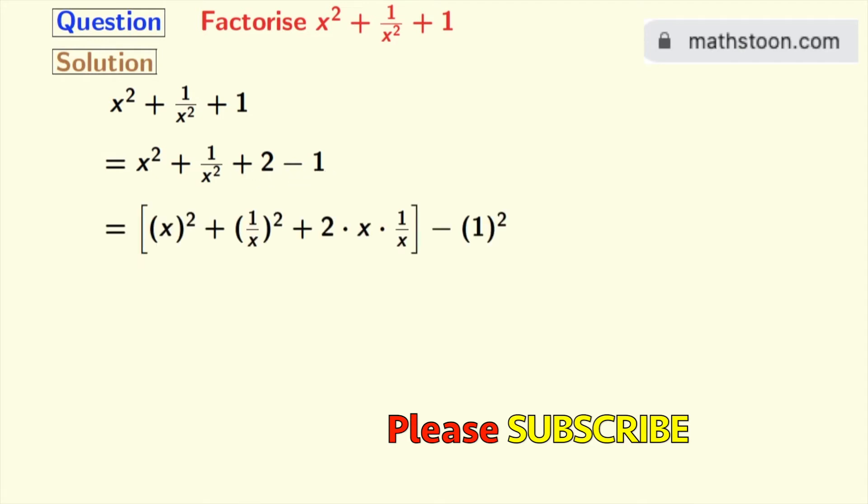Now in the second step, we will rewrite x square as x whole square, 1 by x square as 1 by x whole square, and 2 as 2 times x times 1 by x. As x gets cancelled here, so we are left with 2, and 1 is written as 1 whole square.